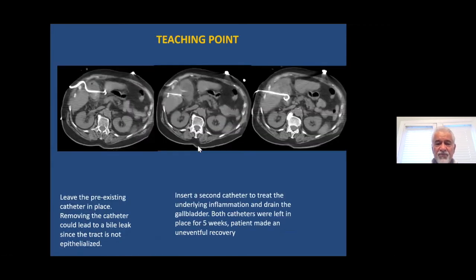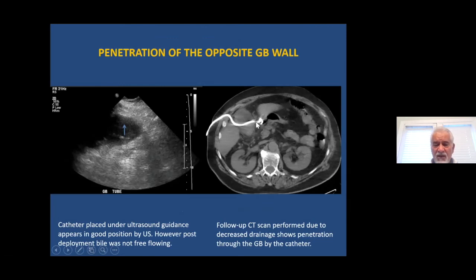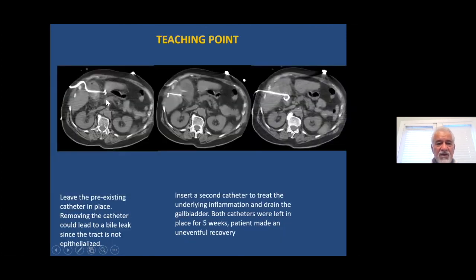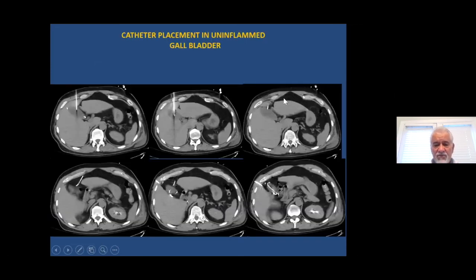Here is the situation in the same patient: the gallbladder catheter is going across as we saw, and we leave that catheter there but place a second catheter to decompress the gallbladder. Once the gallbladder is decompressed, you can either leave both for some time or take out the first one, since the gallbladder is now being drained by the second catheter.